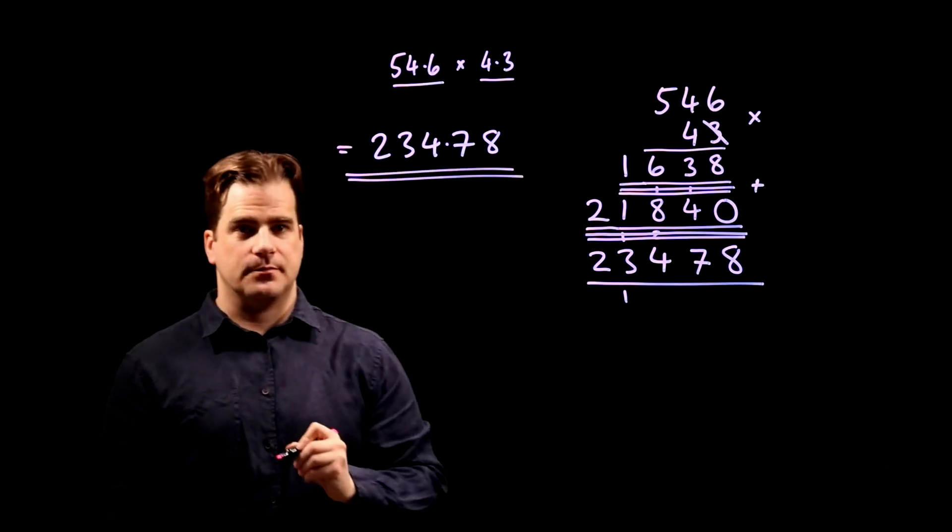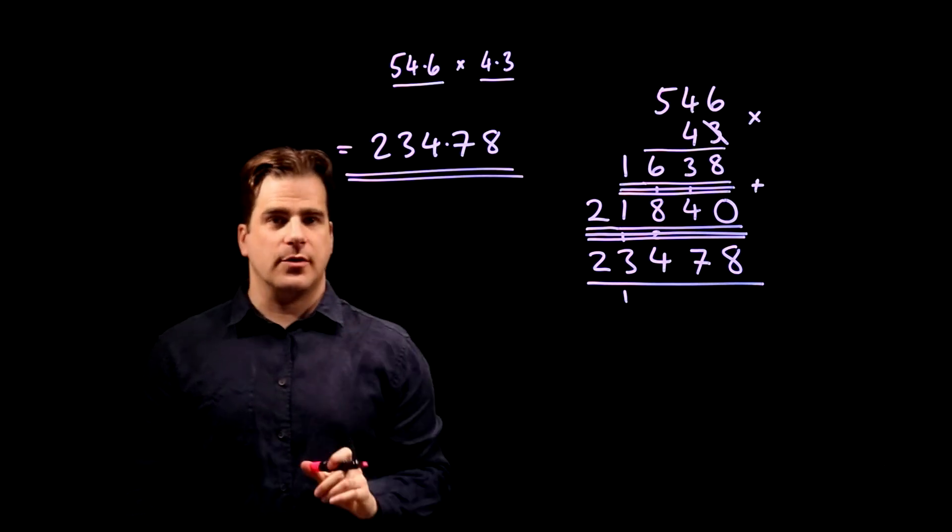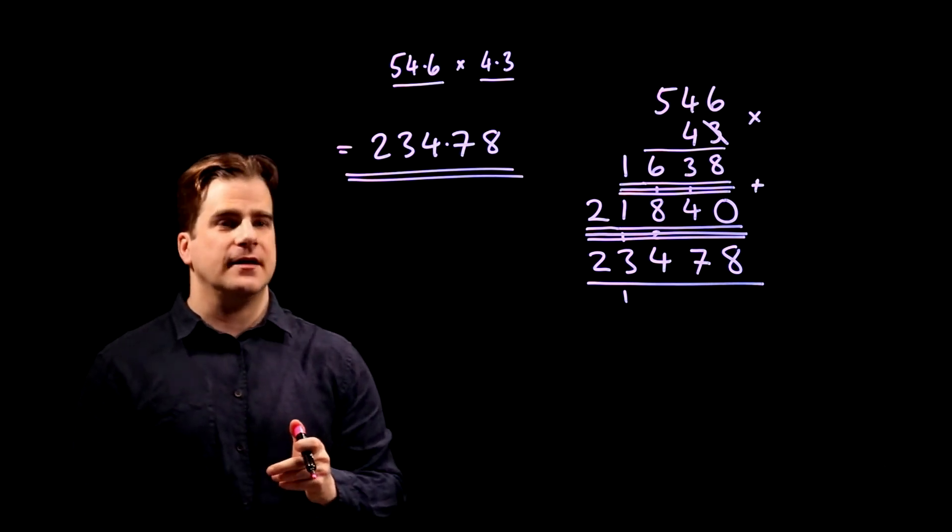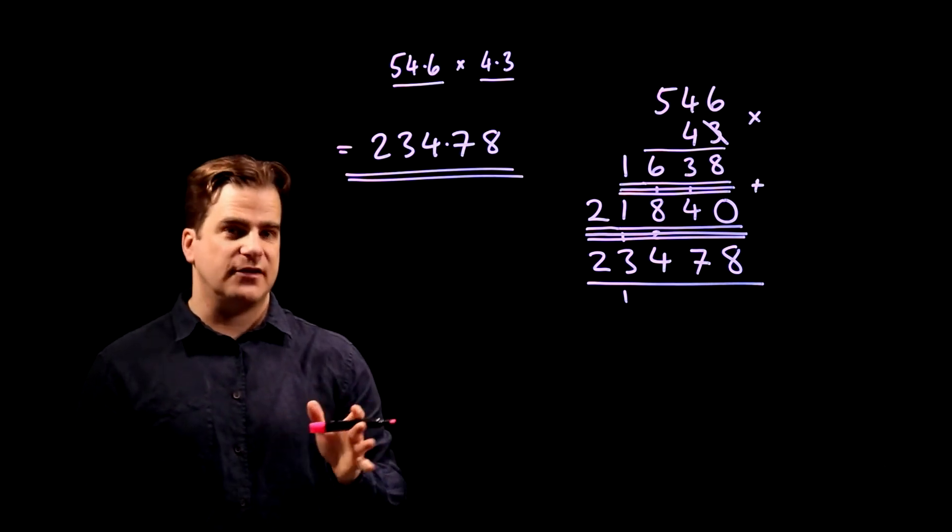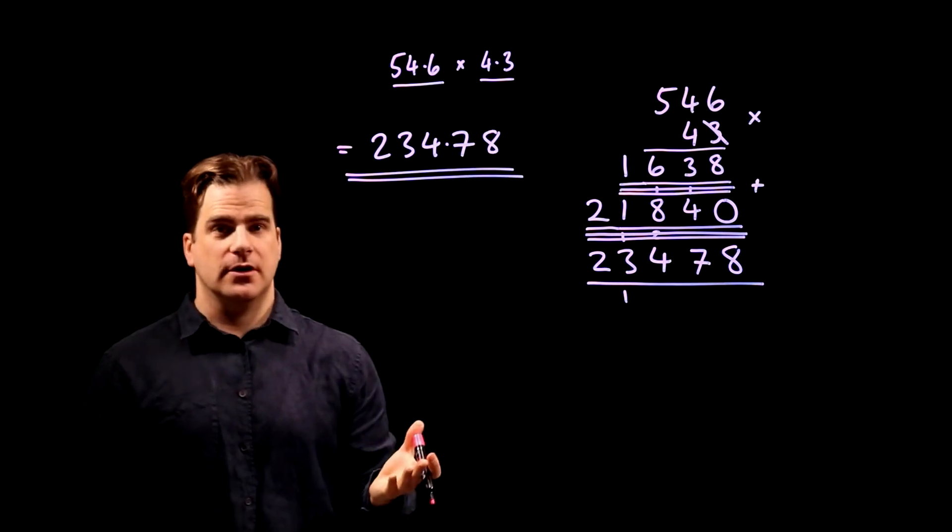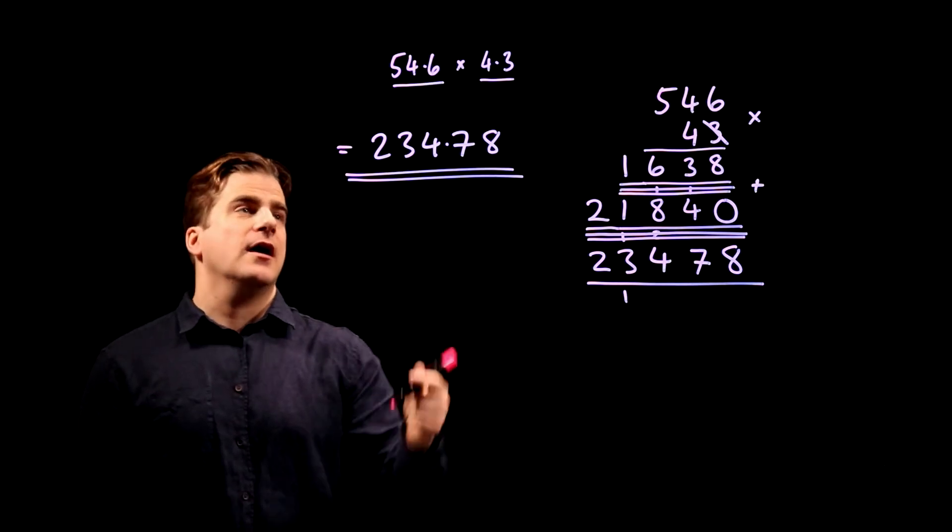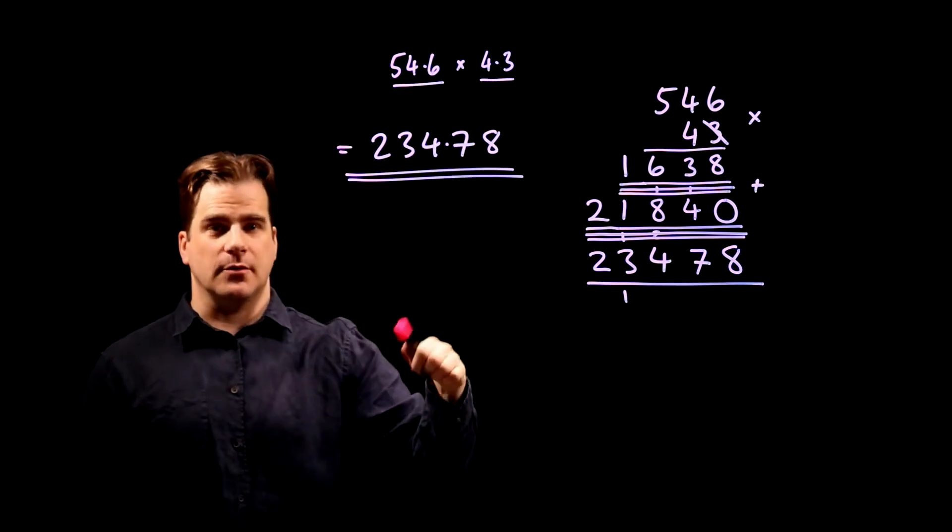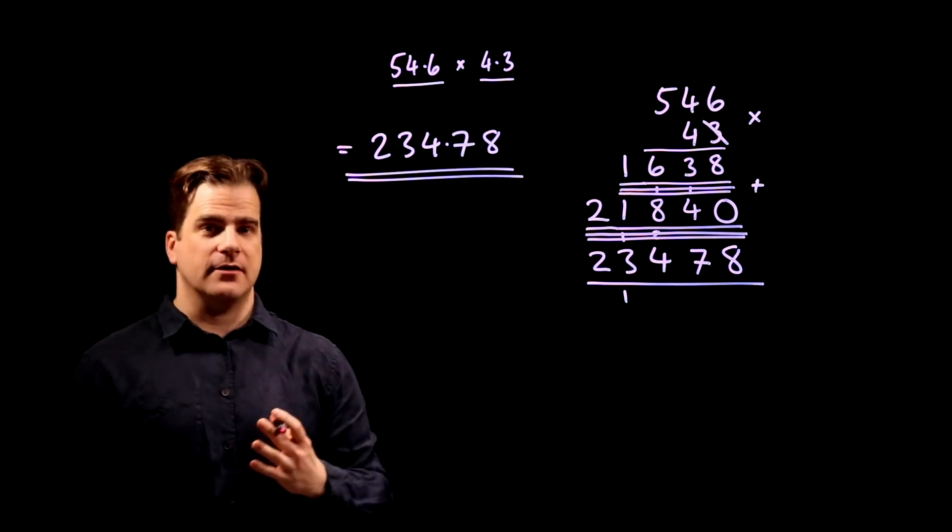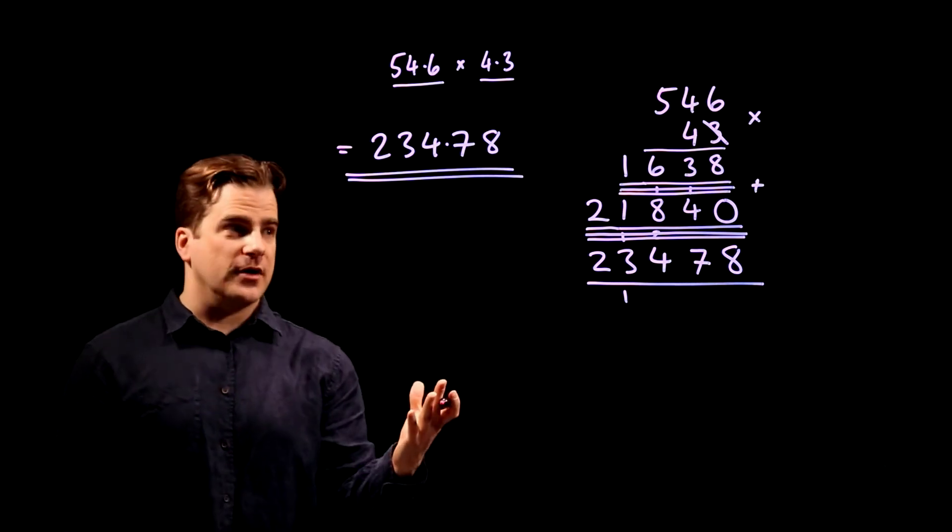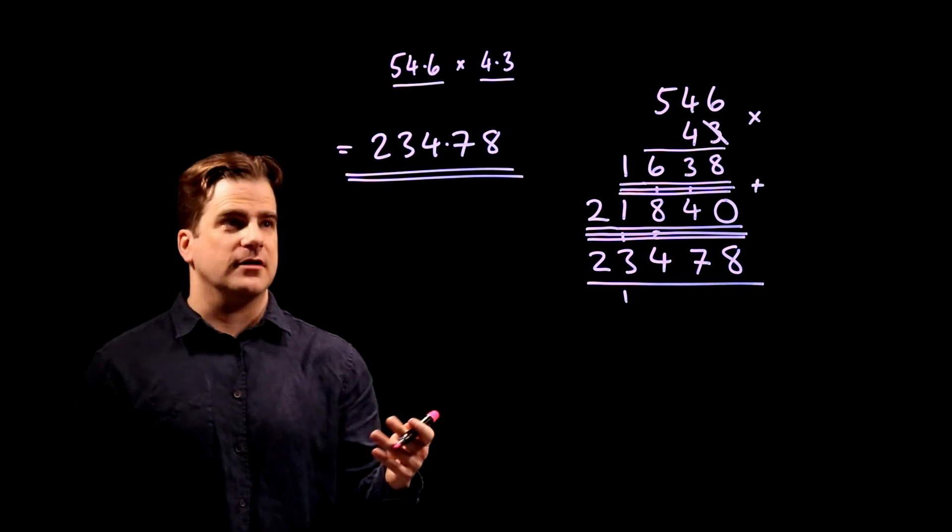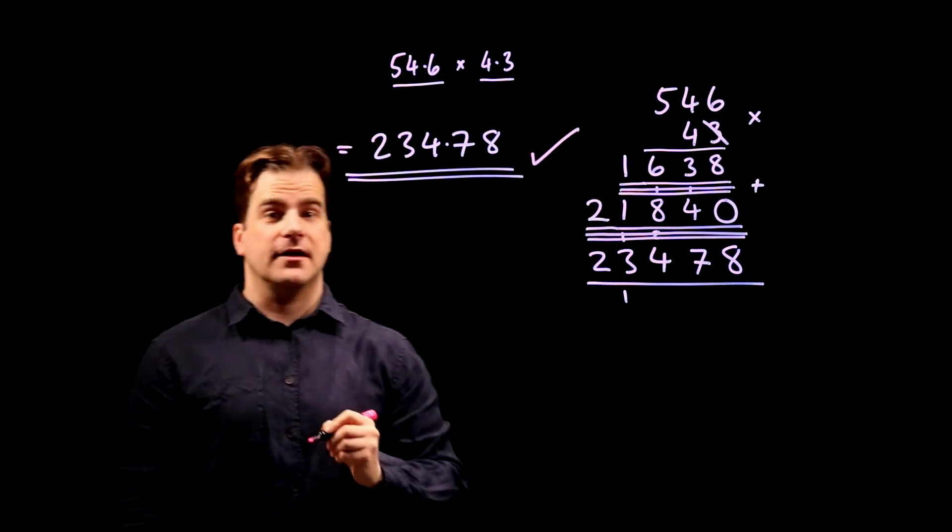Always do a quick check to see if it's sensible. 54.6 is close-ish to 50, 4.3 is close-ish to 4. 50 times 4 is 200, and we've reduced both of those numbers in that estimation, so we're looking for a number a bit bigger than 200. And yes, 234 is a bit bigger than 200. In other words, we're looking for a number, as we say, of the order of magnitude of 200, and 234.78 is.